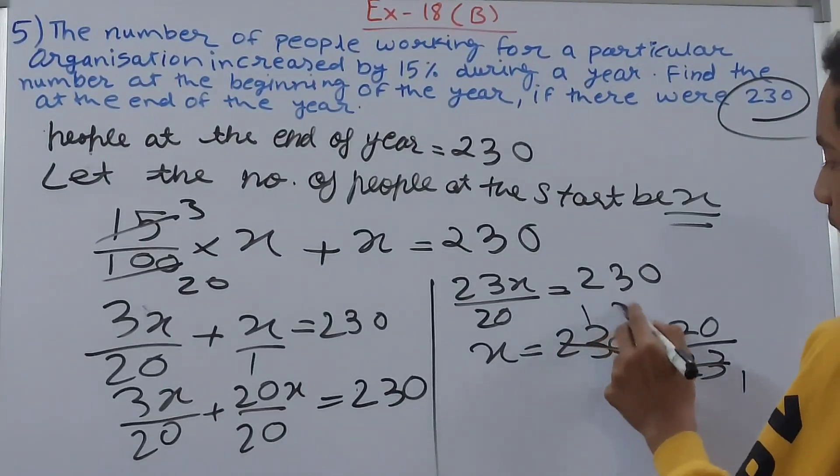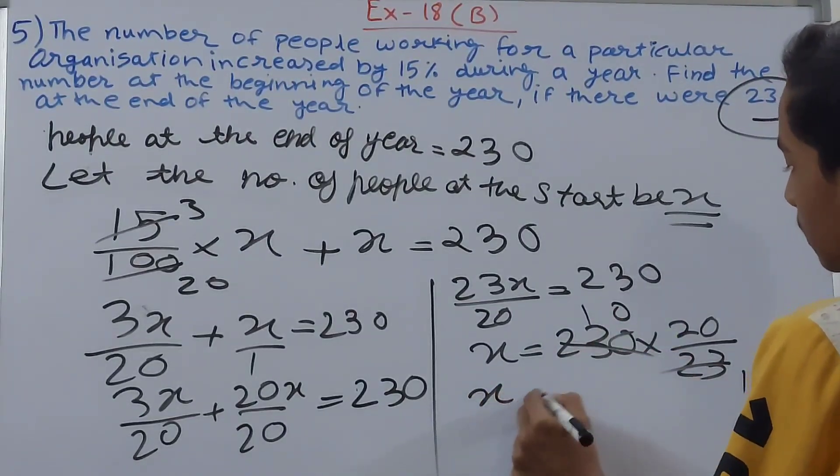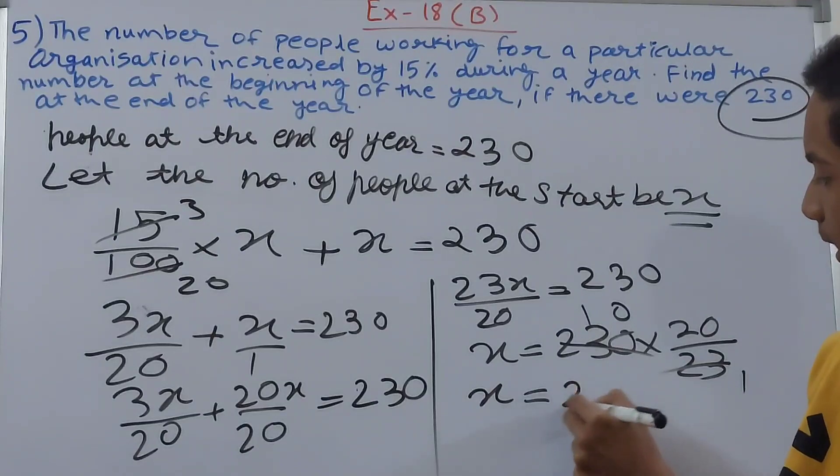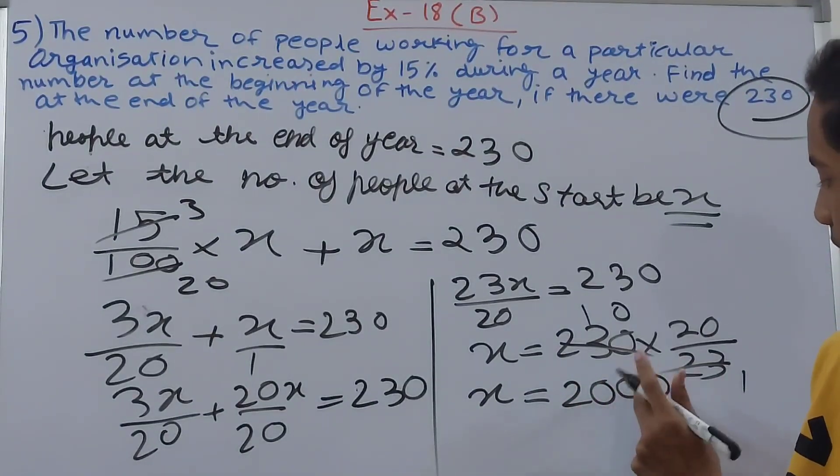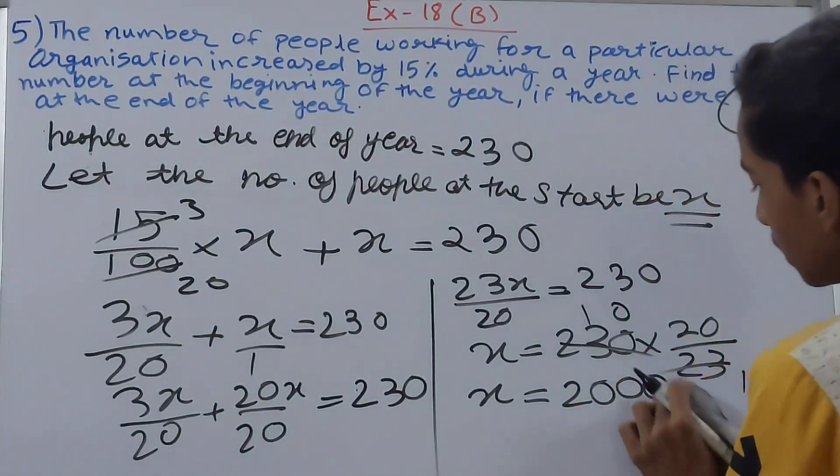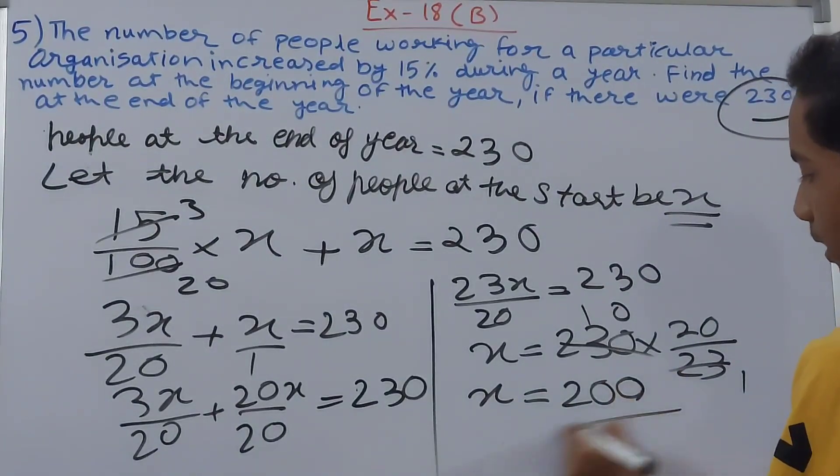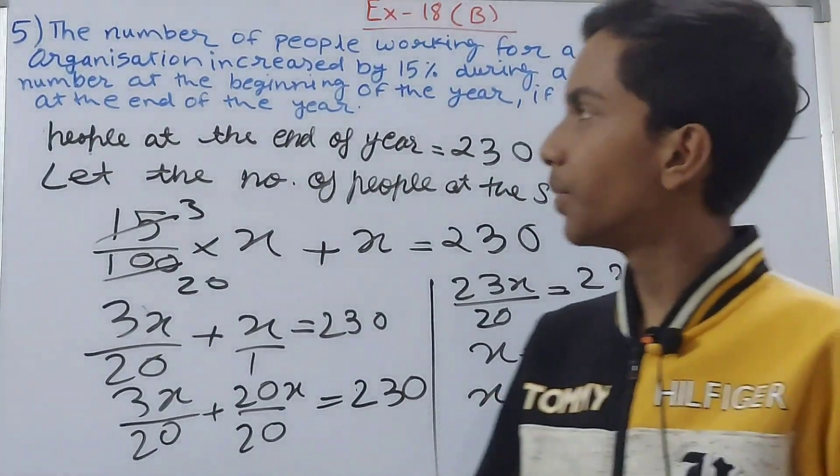This is 200. So there were 200 people at the start of the year when that company was in the start of the organization.